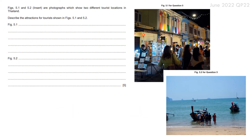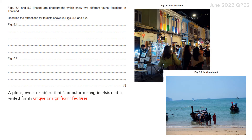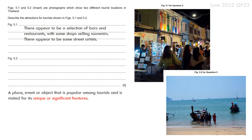Here's an example question: Figures 5.1 and 5.2 are photographs showing two different tourist locations in Thailand. Describe the attractions for tourists shown in those figures. For Figure 5.1, there is a selection of bars and restaurants, some shops selling souvenirs, and what appear to be street artists — suggesting it's quite an arty area, which is why people might want to go there.